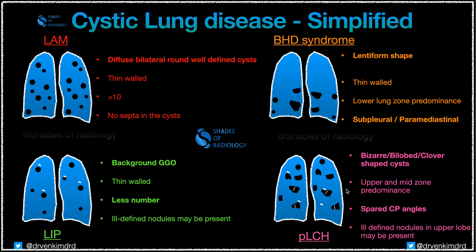These are the classic features of common cystic lung diseases with syndromic manifestations. The characteristic location and background lung changes always give a clue to direct us toward the diagnosis. Thank you very much for watching.